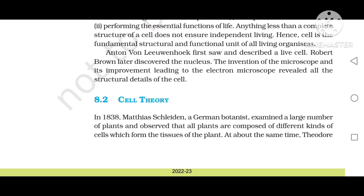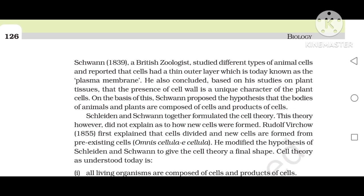Cell theory. In 1838, Matthias Schleiden, a German botanist, examined a large number of plants and observed that all plants are composed of different kinds of cells which form the tissue of the plant. At about the same time, Theodor Schwann, 1839, a British zoologist, studied different types of animal cells and reported that cells had a thin outer layer, today known as the plasma membrane. He also concluded that the presence of cell wall is a unique character of the plant cell.